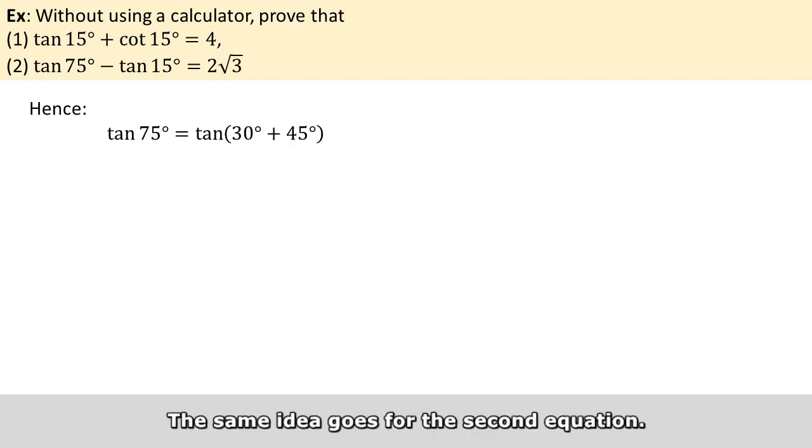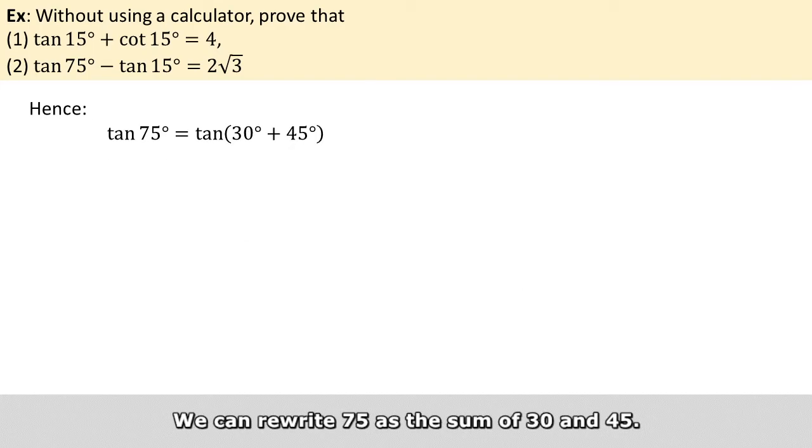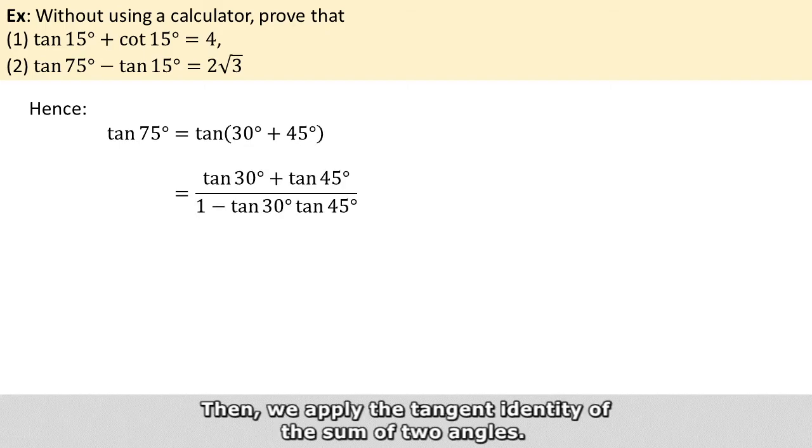The same idea goes for the second equation. We can rewrite 75 as the sum of 30 and 45. And then we apply the tangent identity of the sum of two angles.